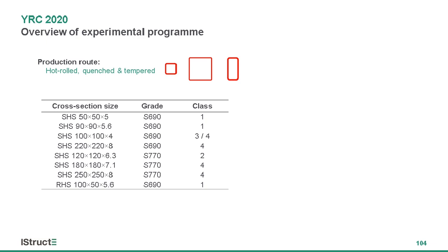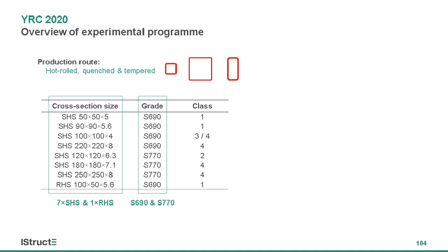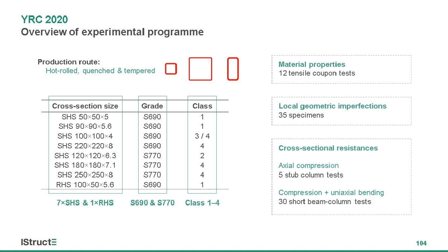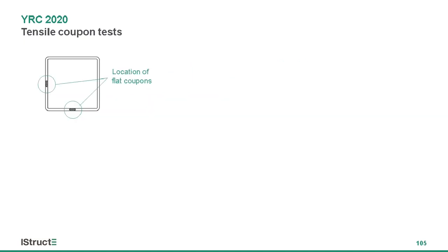In our testing program, the materials were hot-rolled and quenched and tempered to achieve their high strength. We looked at 7 square and 1 rectangular hollow sections, 2 steel grades — S690 and S770 — and a range of cross-section classes from class 1 to 4 according to Eurocode 3. We conducted 12 tensile coupon tests, local imperfection measurements for all specimens, and 5 stub column tests and 30 short beam column tests.